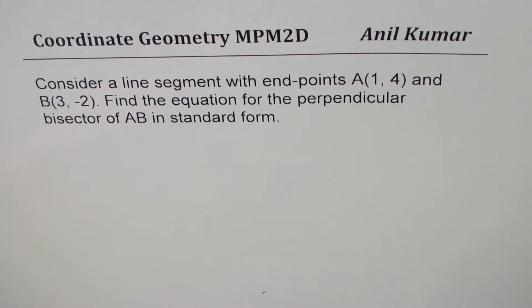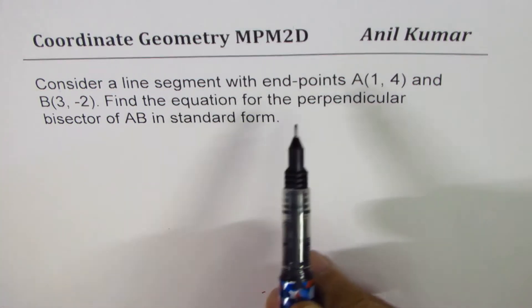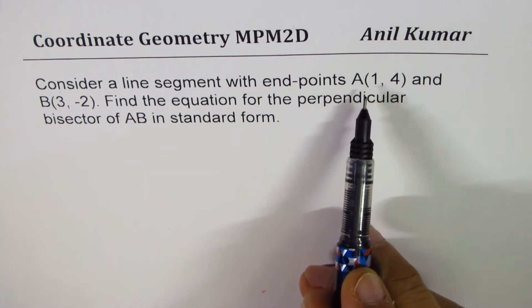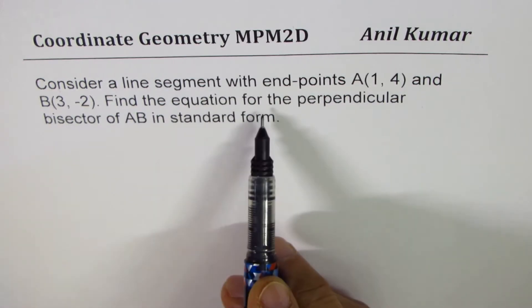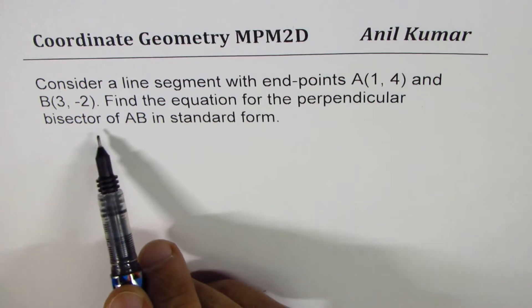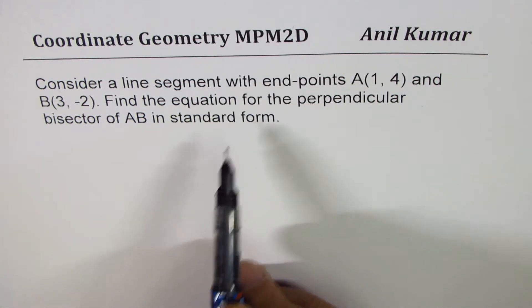The first question here from the test paper is, consider a line segment with endpoints A(1,4) and B(3,-2). Find the equation of perpendicular bisector of AB in standard form.